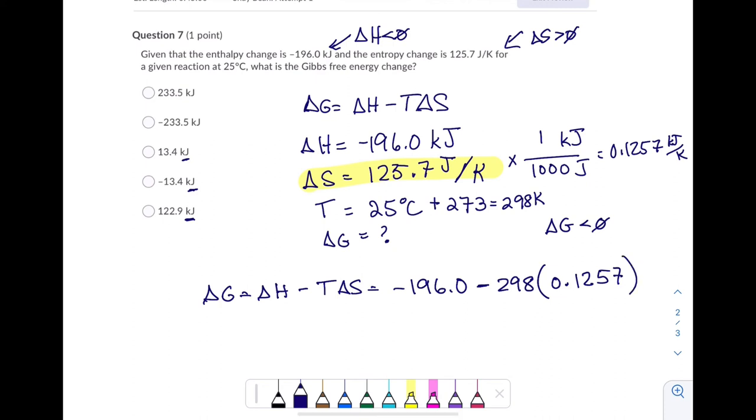Minus 298. That's Kelvin times the 0.1257. Again, that is kilojoules per Kelvin. So my Kelvin cancels. You want to plug that in. I'm over here. Watch your signs. You do have to watch your signs. This is simple math, but you really have to be careful with that simple math.